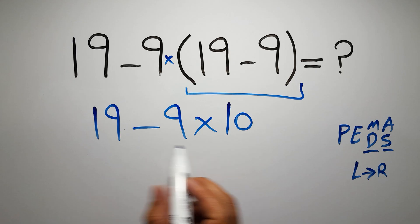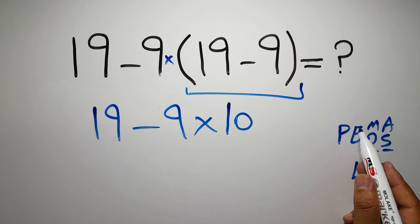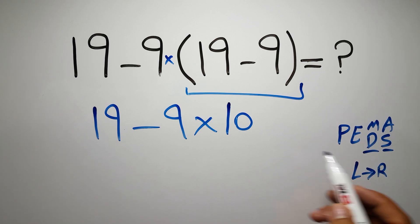Now in this expression we have one subtraction and one multiplication. In PEMDAS, multiplication comes before subtraction.